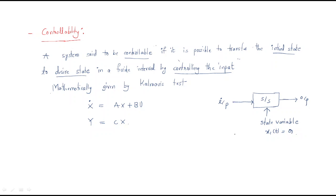For example, the initial state is 'a' and we require the state to become 'b'. So initially it is at 'a' and we convert it to 'b' in a finite interval of time by controlling the input. By varying the input we change the state variable from 'a' to 'b' in a finite interval of time. Then the system is said to be controllable.